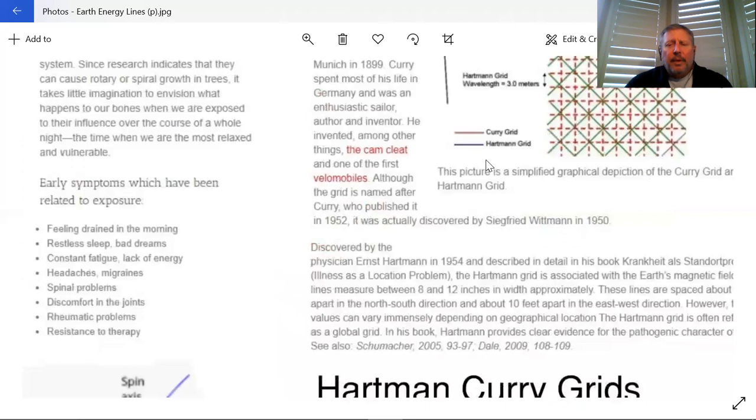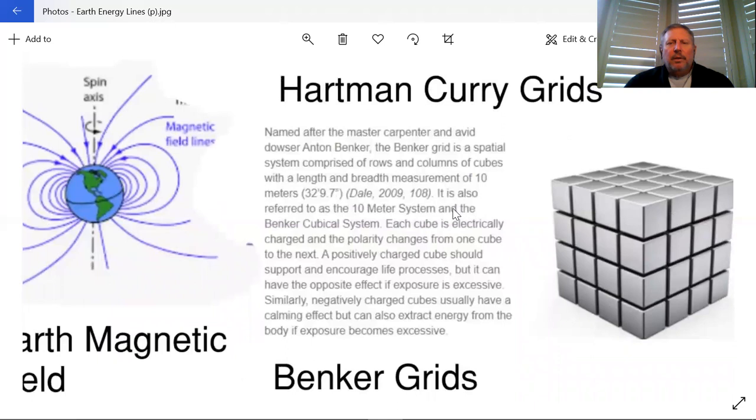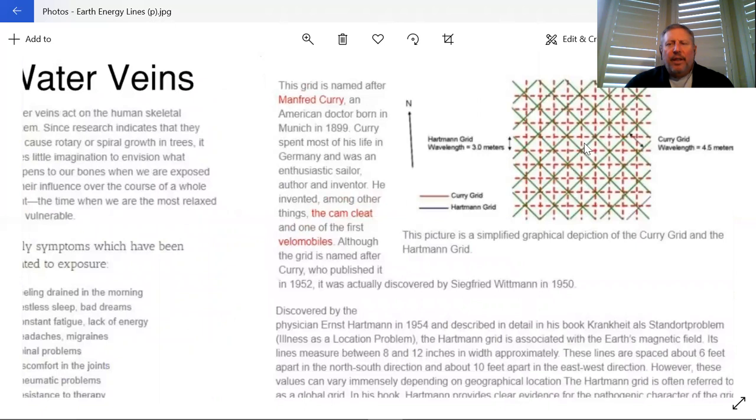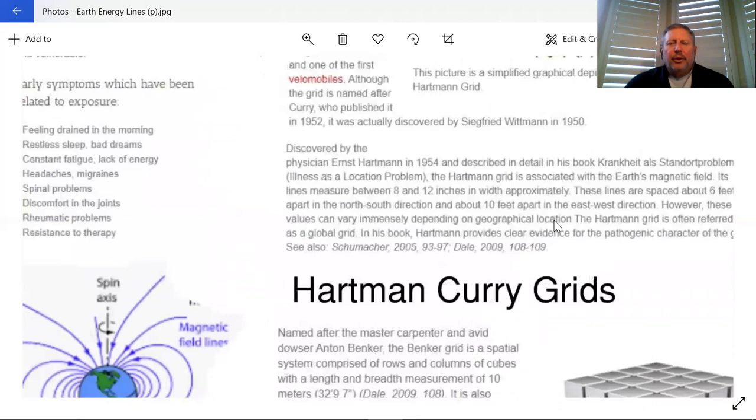The other grids that are within the earth is what we call the Benker grids. They look kind of like a Rubik's cube. They can run vertical. When you look at these Hartman-Curry lines, they're on the earth and they have a vertical component, which is that electrical component, which is the negative component. When we walk on them, we're probably picking up some of the magnetic component and we're getting that energy, but this electric component that rises is what's detrimental to us.